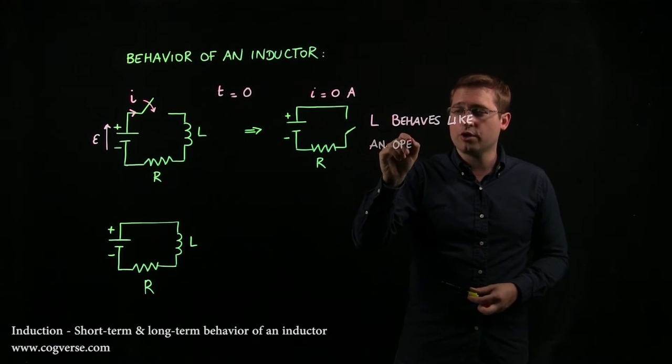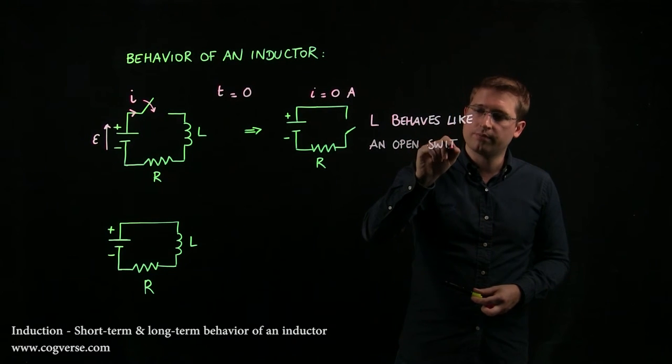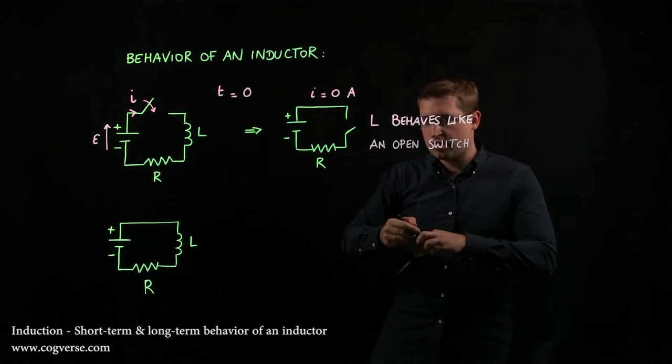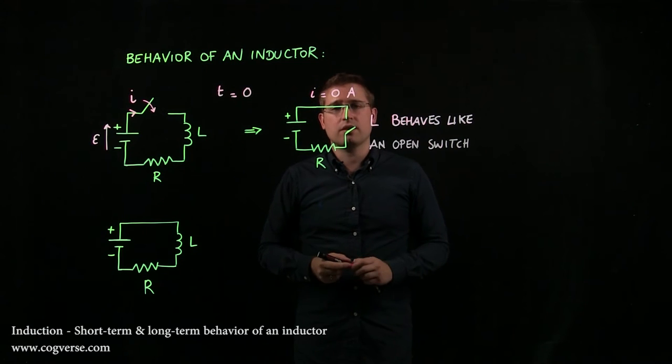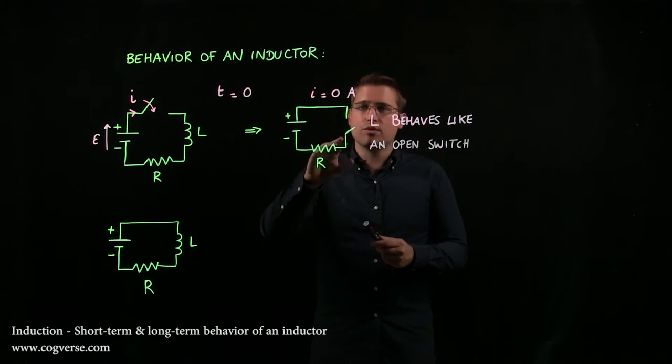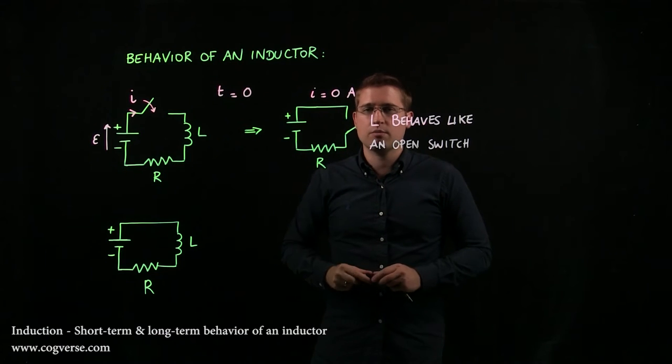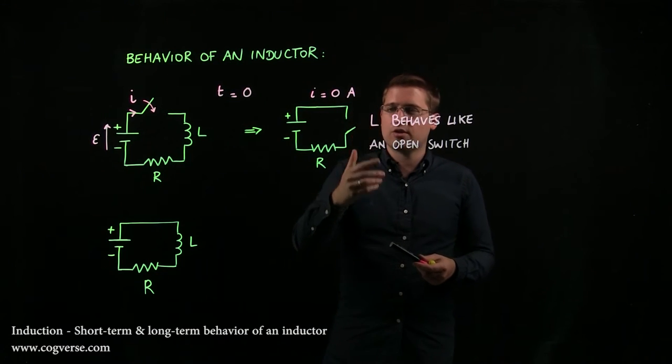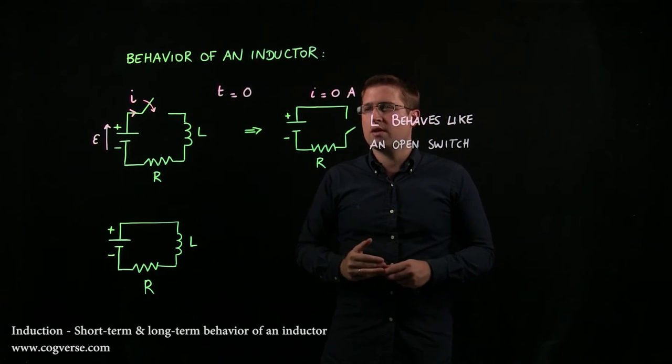Now, arguably, because this is a very simple circuit, it doesn't tell us much. But if you had a complicated circuit, then you might be able to disable a branch and just look at the rest of the circuit, because you would know that the inductor behaves like an open switch initially.